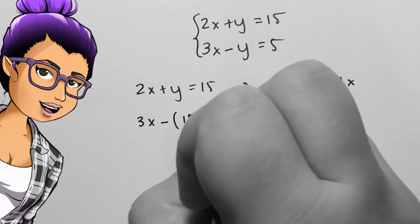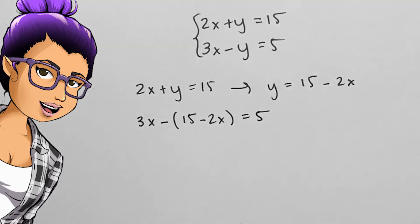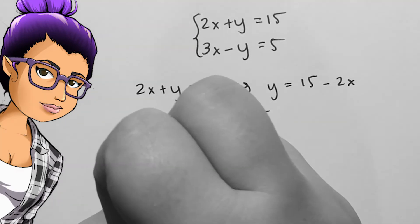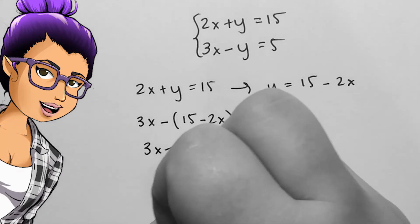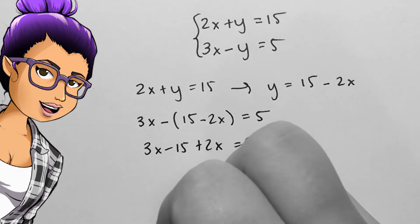Now take the y you found and substitute it into the bottom equation. We should have an equation with only numbers, operators, and the variable x. 3x minus our y from the last step equals 5.